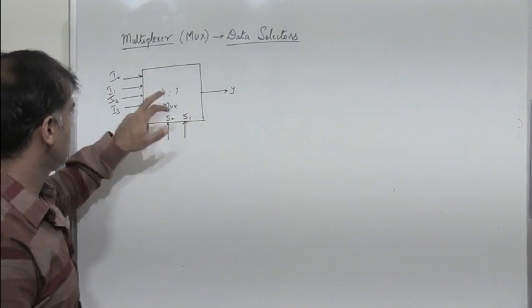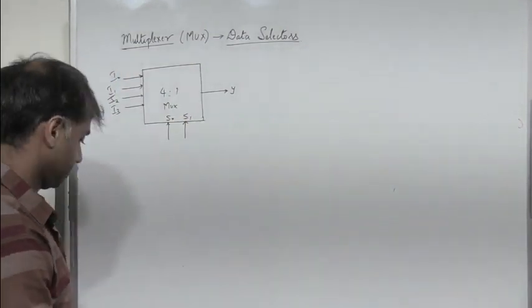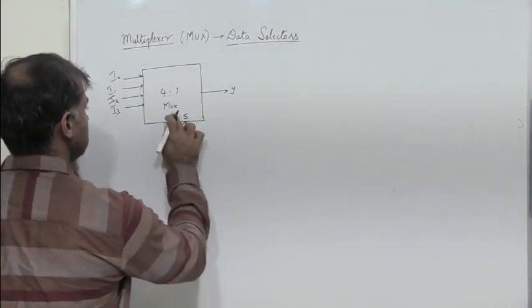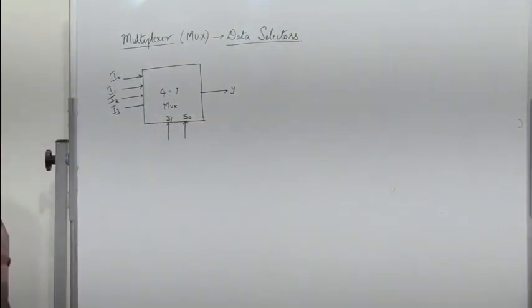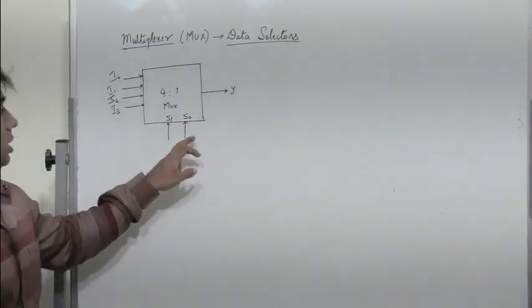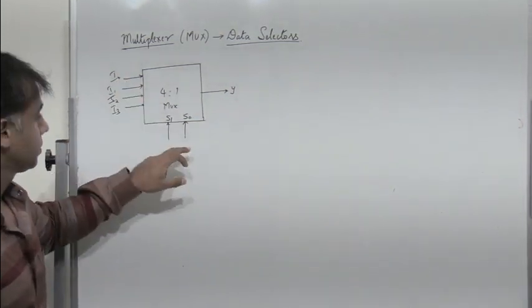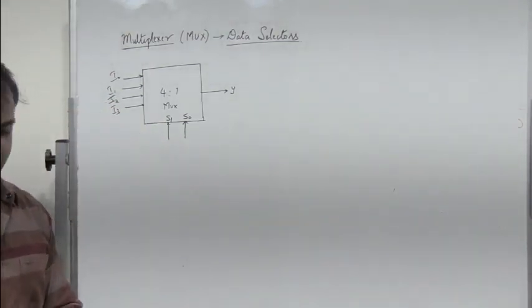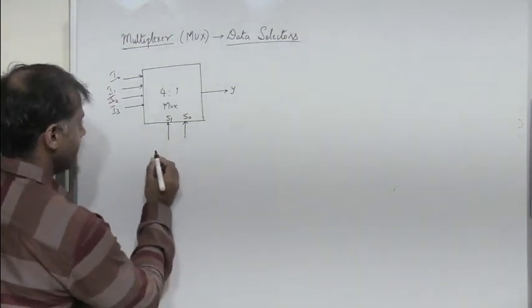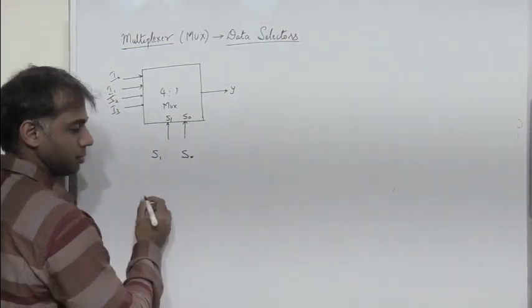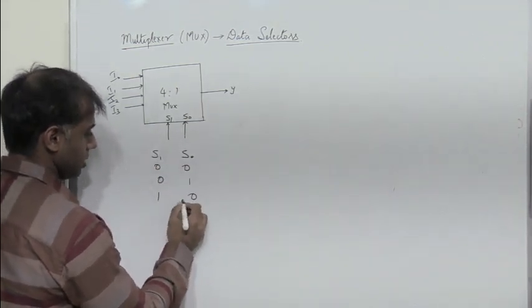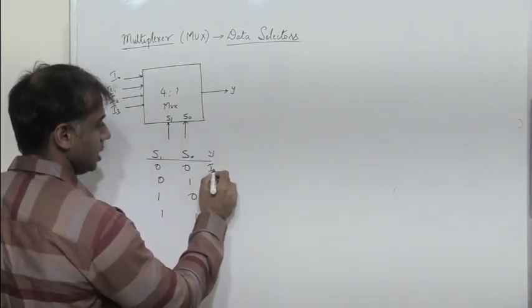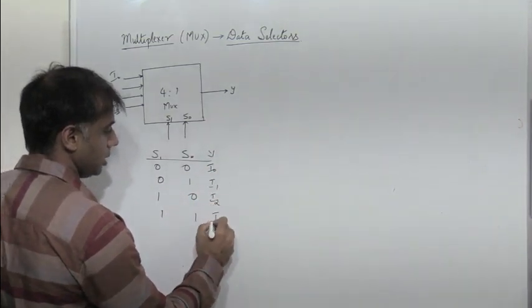The truth table: s1 is the MSB and s0 is the LSB. When s1=0 and s0=0, i0 is selected. When s1=0 and s0=1, i1 is selected. When s1=1 and s0=0, i2 is selected. When s1=1 and s0=1, i3 is selected. So we have four possible select line combinations selecting i0, i1, i2, and i3 respectively.